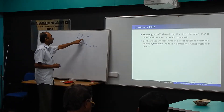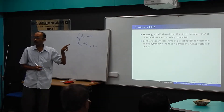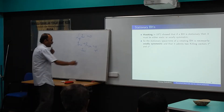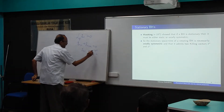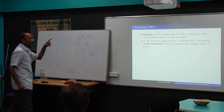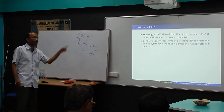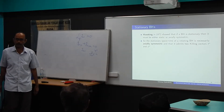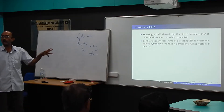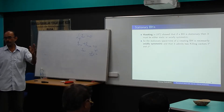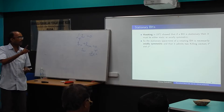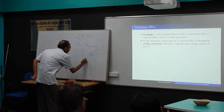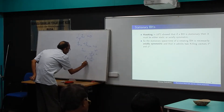Another way to identify a Killing vector: if the metric coefficient g_{μν} is independent of some spacetime coordinate x^l, then the tangent vector along that coordinate δ^l is a Killing vector. For an axisymmetric stationary spacetime — a rotating black hole — all metric coefficients must be independent of the time coordinate t and the polar coordinate φ. So the metric is independent of t and φ, giving Killing vectors t^α = δ^t and φ^α = δ^φ.